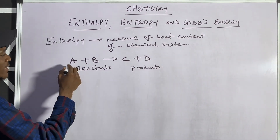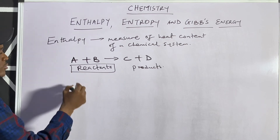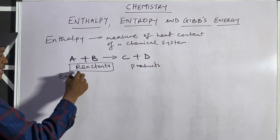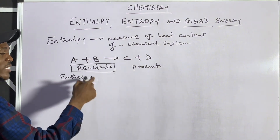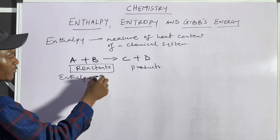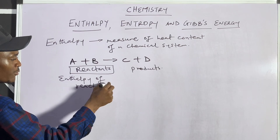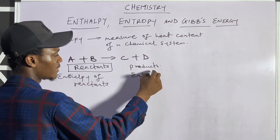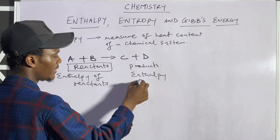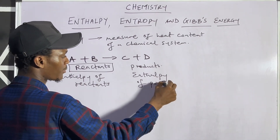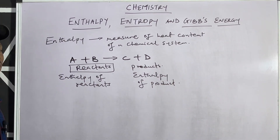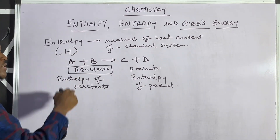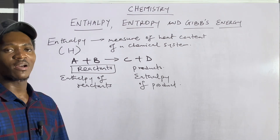So the heat content of the reactant is known as the entropy of the reactants. Whenever you see entropy, you know it has to do with heat content. The entropy of reactants is also called the heat content of reactants, and entropy of product is called the heat content of product. The symbol for entropy is H, so whenever you see H in a chemical reaction,